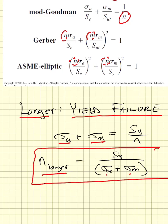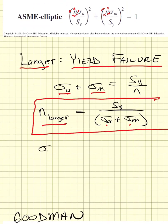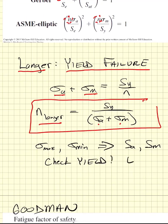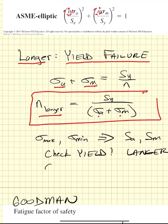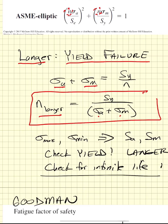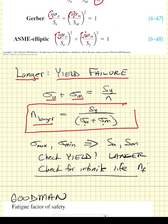When solving these problems, identify the maximum and minimum stress, calculate the stress amplitude and mean stress, then check for yield using Langer. Next, check for infinite life using one of the criteria and confirm that the fatigue factor of safety is greater than or equal to 1. If you have infinite life, you're done; if not, calculate cycles to failure. These steps are easily implemented in a spreadsheet.